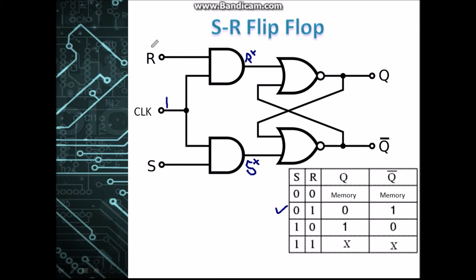Now when R is 0 and S is 1, a 1 AND 1 at S gives us 1 at S*, and a 1 AND 0 at R gives us 0 at R*. When R*=0 and S*=1 is fed into the SR latch, we get Q=1 and Q̄=0.